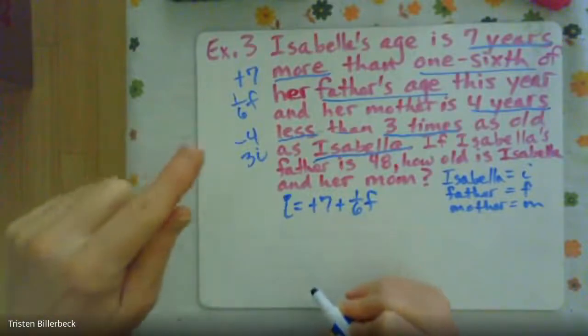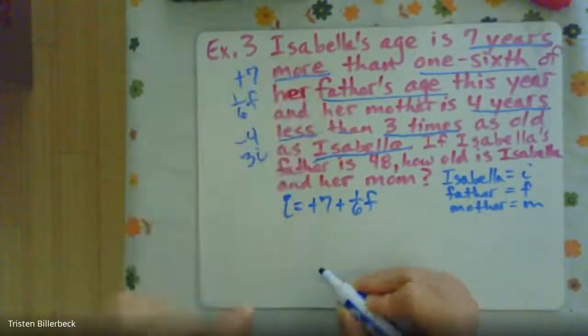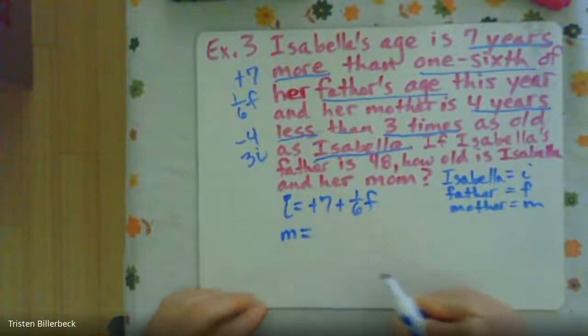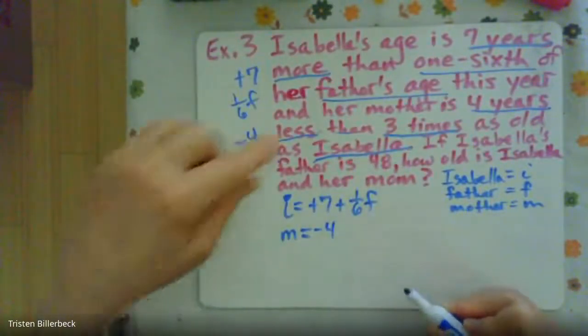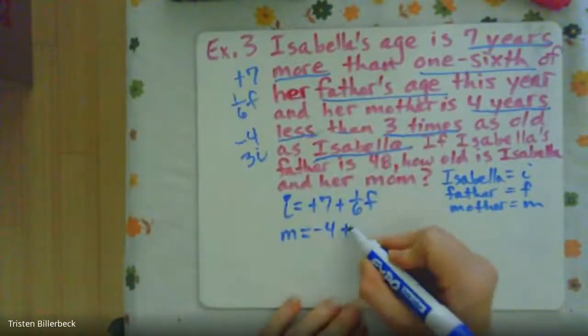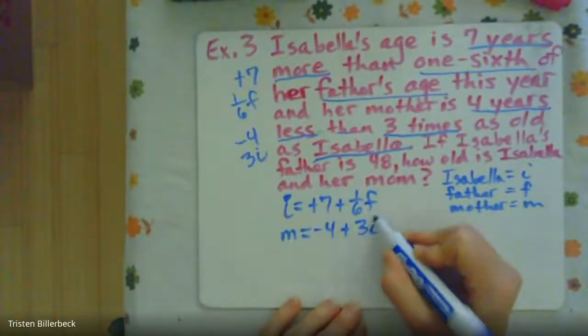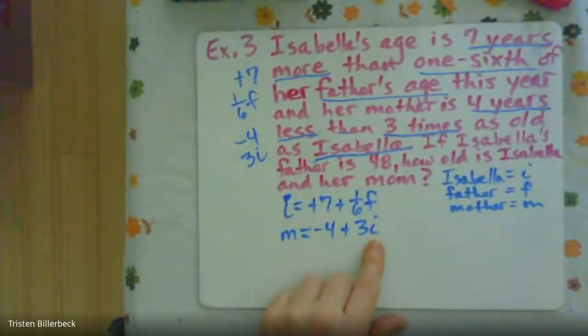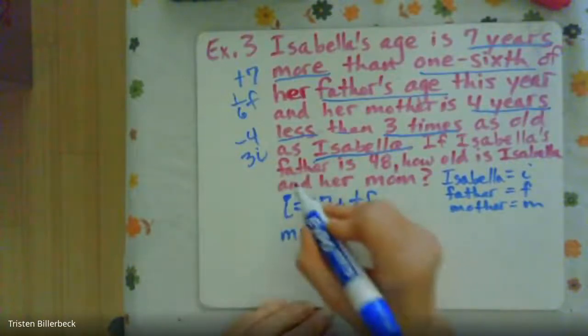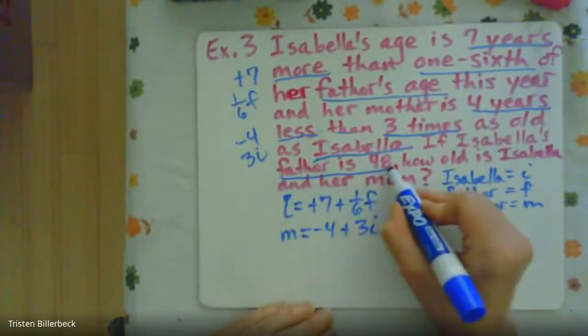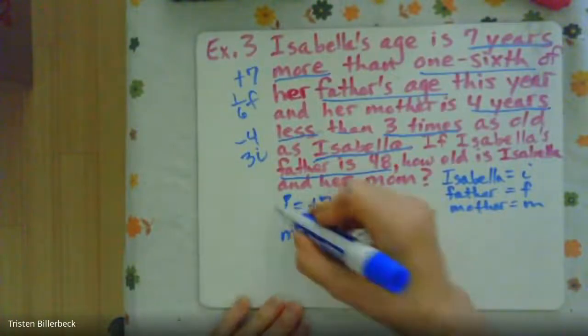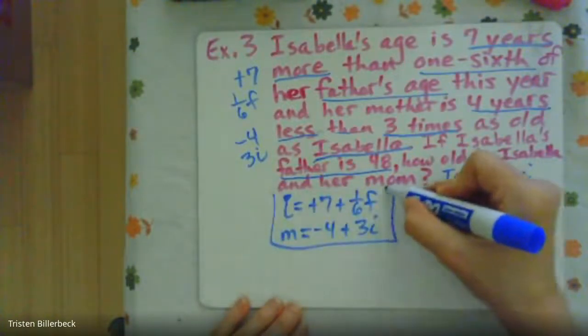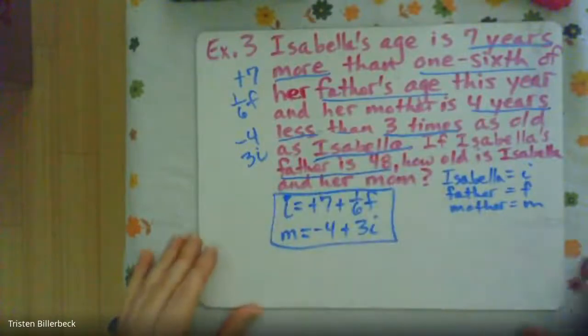Okay, then we have Isabella's mother is four years less, minus four, then three times Isabella's age. So three times Isabella's age. So now let's substitute that the father is 48 years old. So we can substitute that in here. So these would be our algebraic expressions, and now we're going to solve.